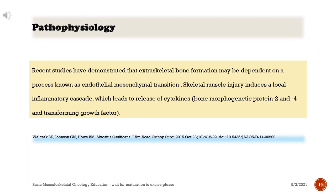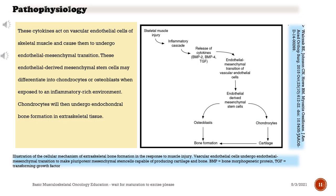Recent studies have demonstrated that extraskeletal bone formation may be dependent on a process known as endothelial mesenchymal transition. Skeletal muscle injury induces a local inflammatory cascade, which leads to release of cytokines — bone morphogenetic protein 2 and 4, and transforming growth factor. These cytokines act on vascular endothelial cells of skeletal muscle and cause them to undergo endothelial mesenchymal transition. These endothelial-derived mesenchymal stem cells may differentiate into chondrocytes or osteoblasts when exposed to an inflammatory-rich environment, and chondrocytes will then undergo endochondral bone formation in extraskeletal tissue.